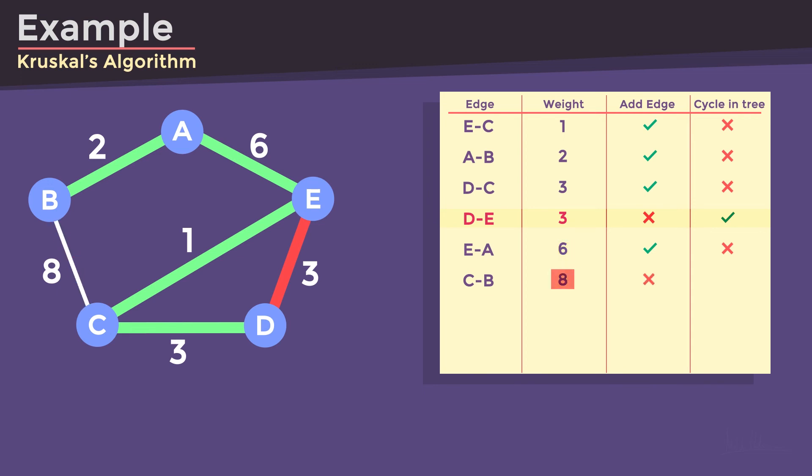But adding edge between C and B is not possible because it forms a cycle. So, we can conclude that adding the edge between DE or adding the edge between BC is not possible anymore because they form a cycle.